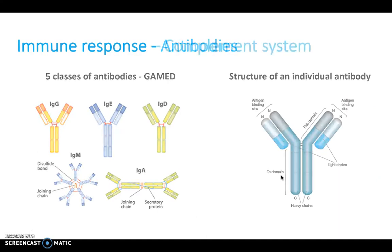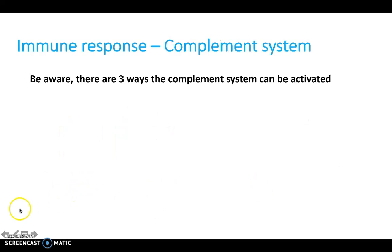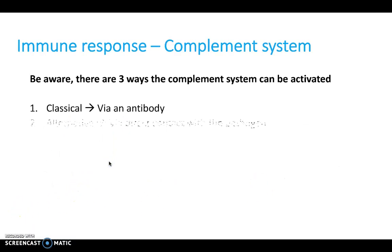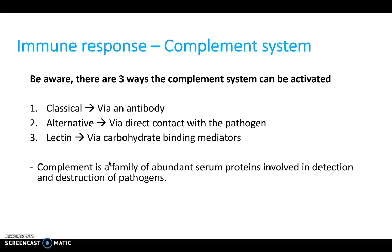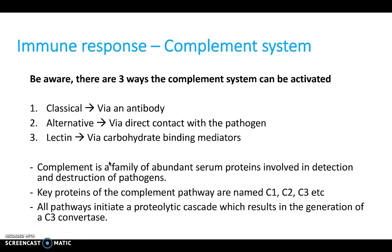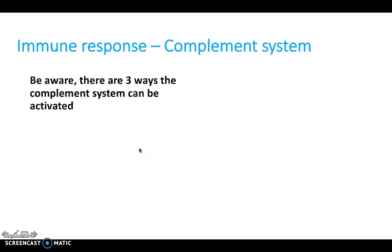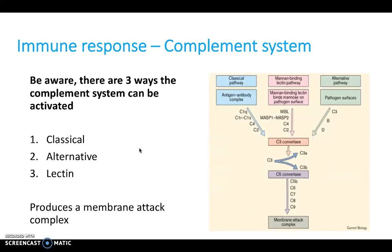Also be aware of the complement system and how it helps the immune response. There are three pathways: classical, alternative, and lectin. Classical is the most common and acts via an antibody. Alternative acts via direct contact with a pathogen, and lectin acts via carbohydrate-binding mediators. All pathways lead to a membrane attack complex — that's the end goal.